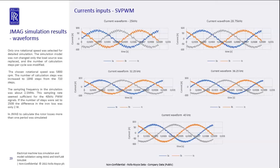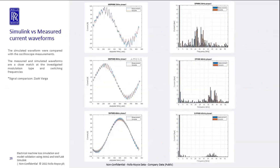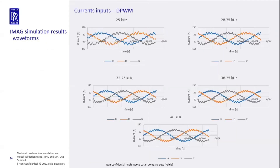Here you can see the different waveforms generated for space vector modulation. As we increase the switching frequency, the current ripple amplitude is reduced. The other modulation technique investigated is a version of discontinuous pulse width modulation — so-called flat-top modulation. In this case, the power electronics control stops switching within one PWM period, which increases the current ripple, affects the torque ripple, and also the losses.